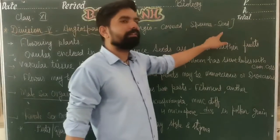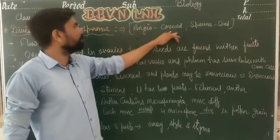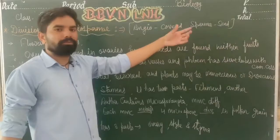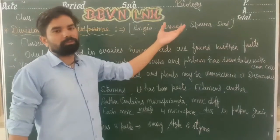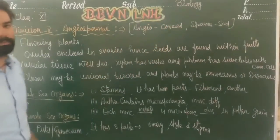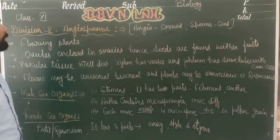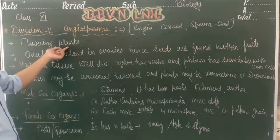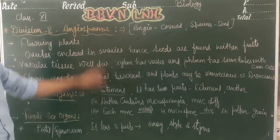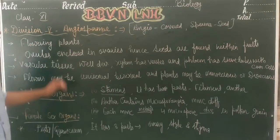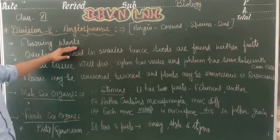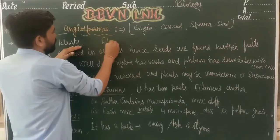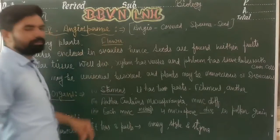What is angiosperm? 'Angio' means covered and 'sperma' means seed — so these are plants whose seeds are covered. Angiosperm plants are also known as flowering plants, unlike gymnosperm which does not produce any flowers.